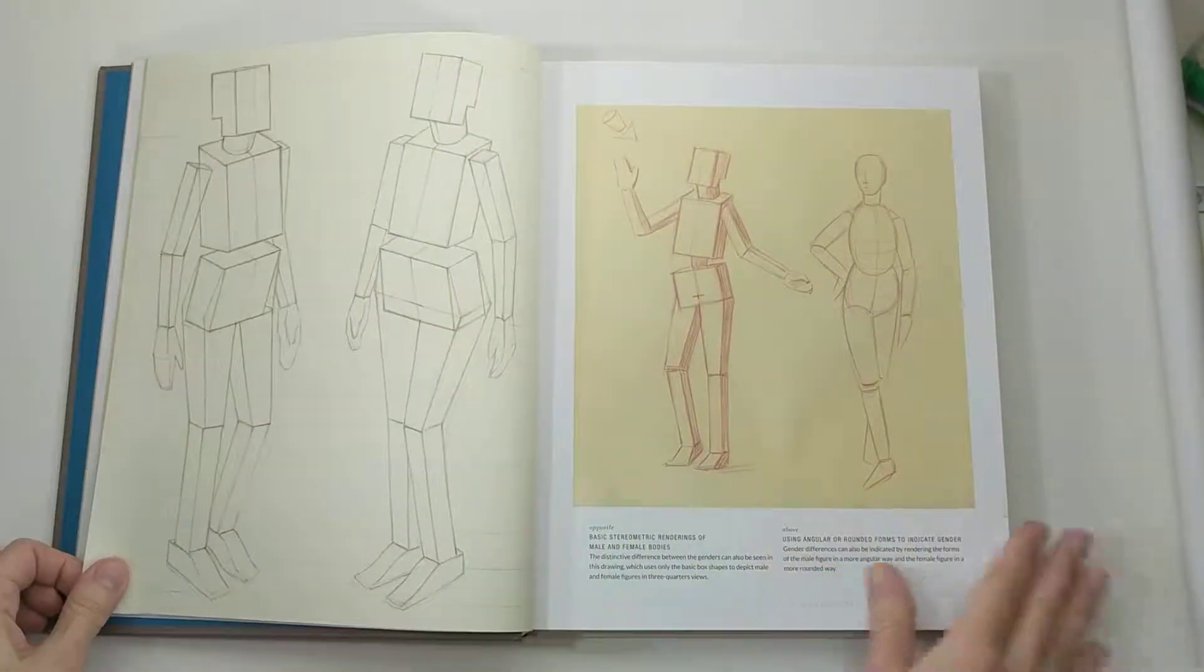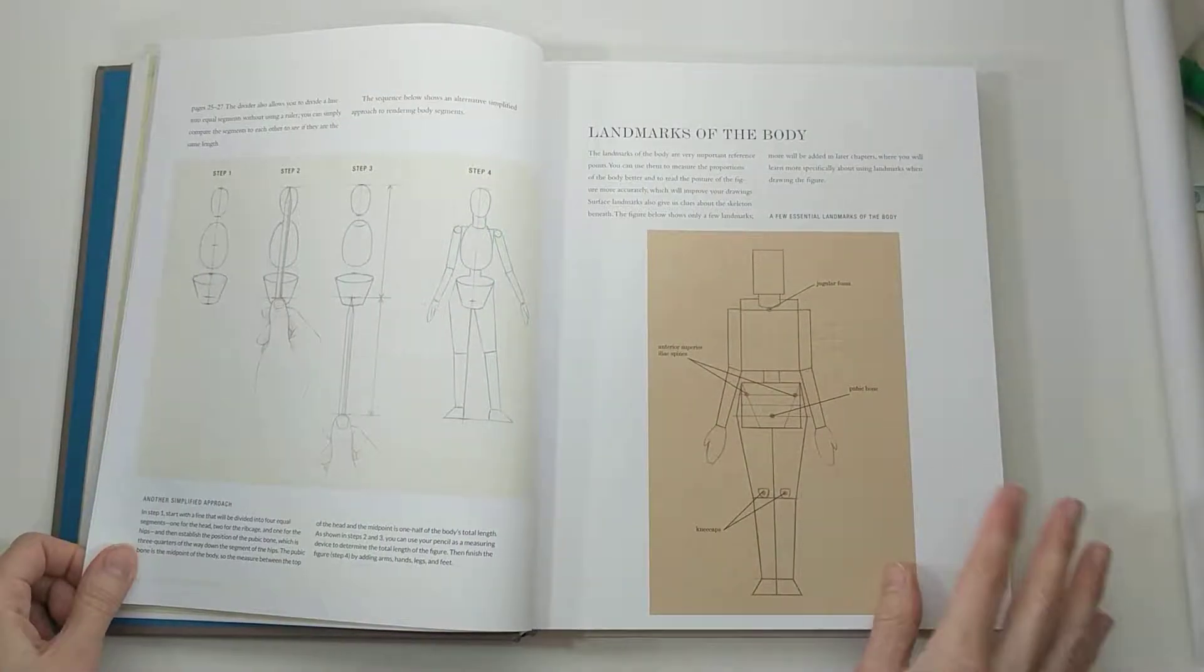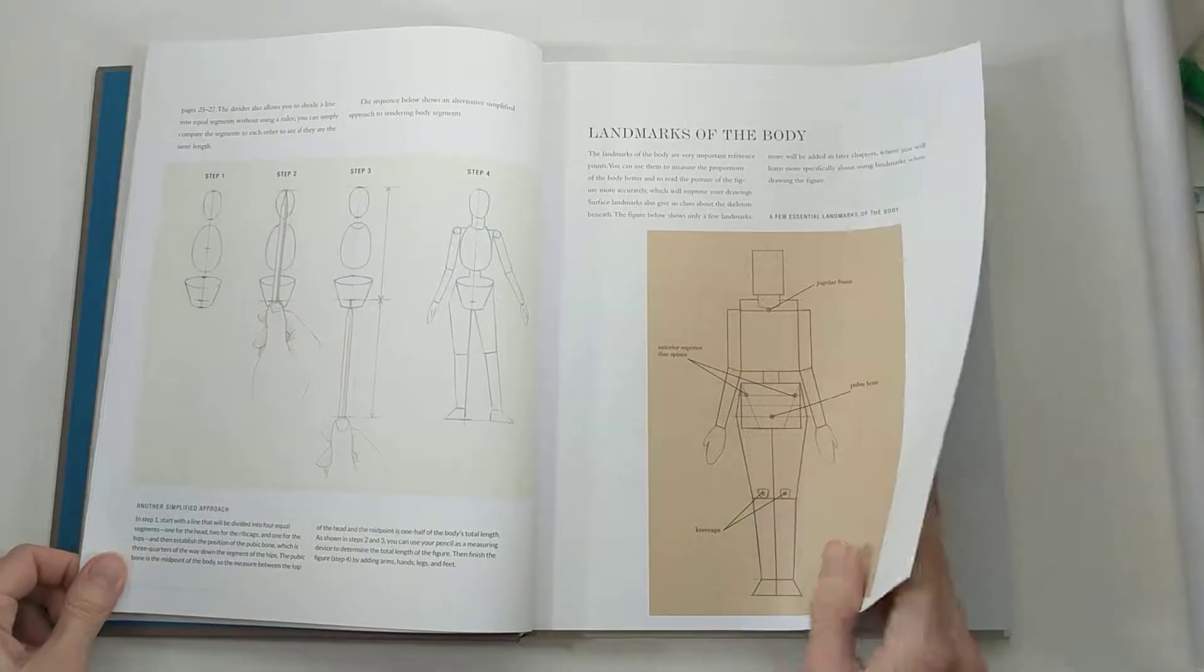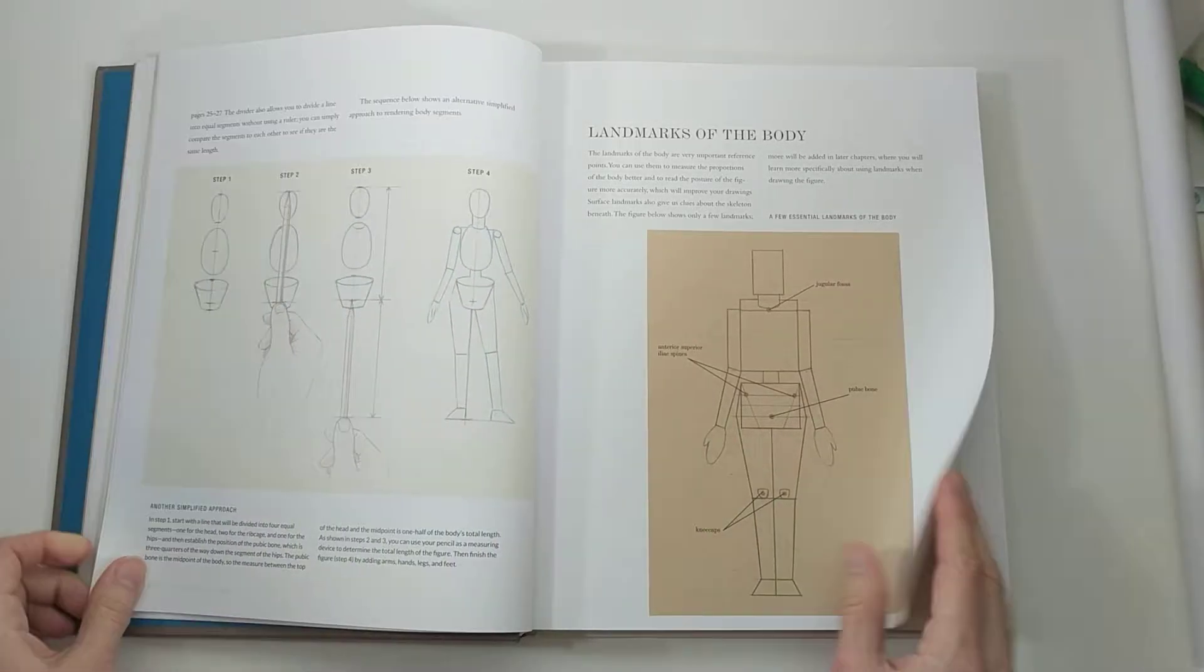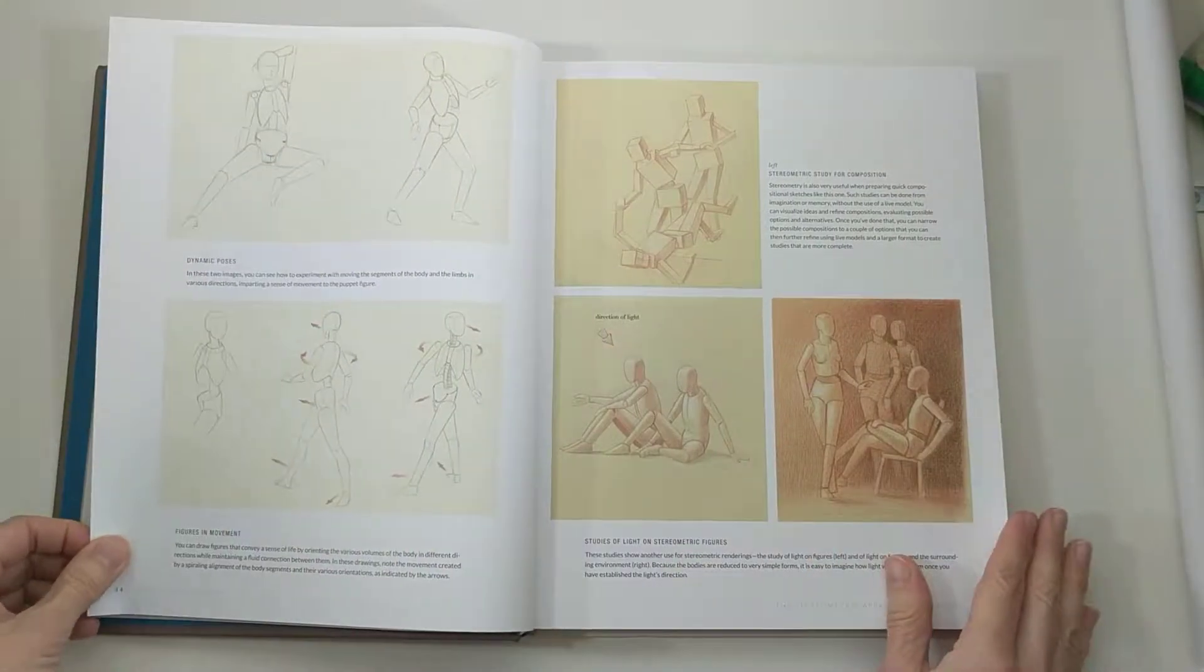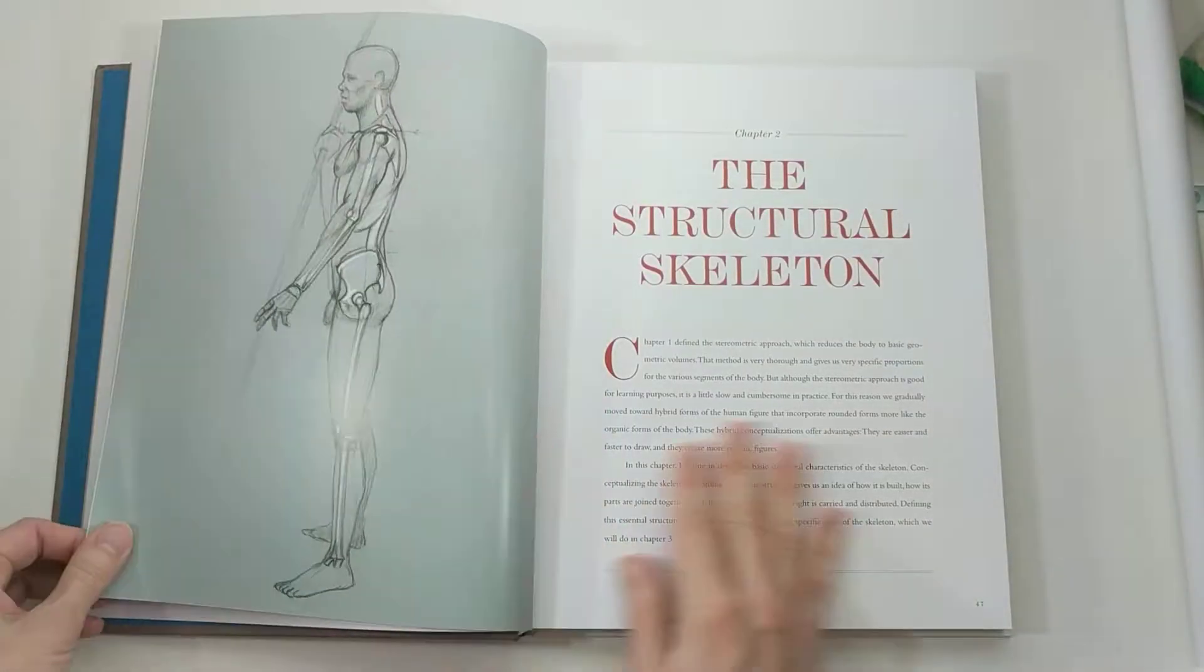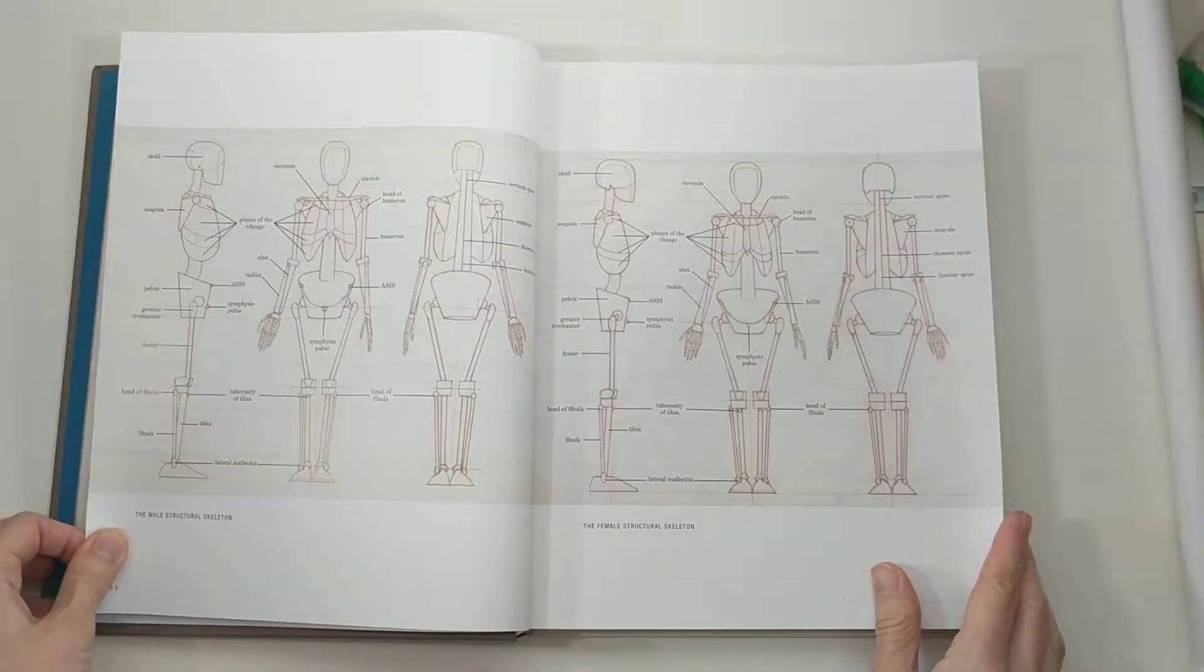He starts out with very simple shapes and landmarks of the body, how to find them, how to measure the body, and then how to show volume. It's almost an architectural approach to drawing the body.